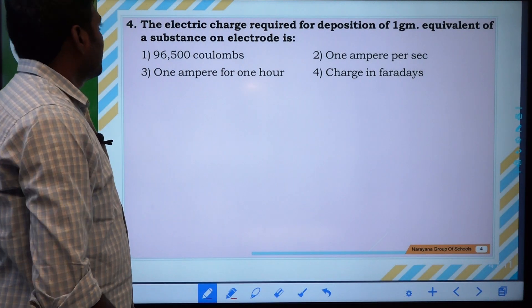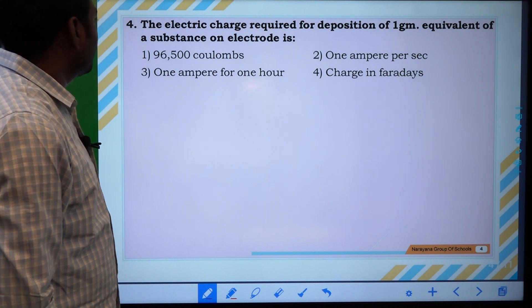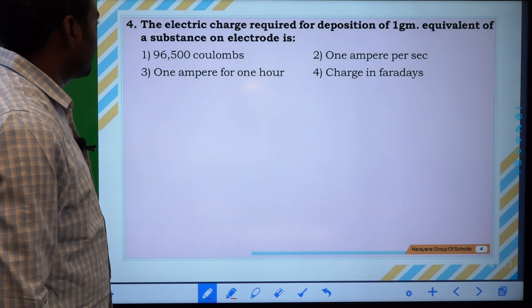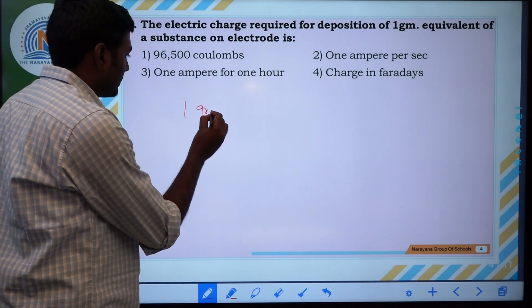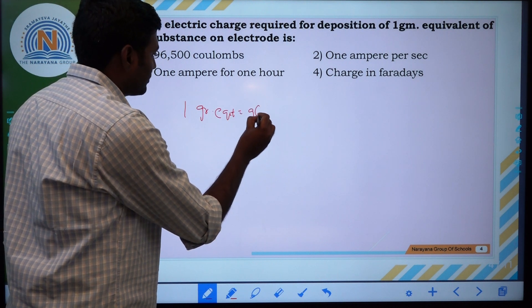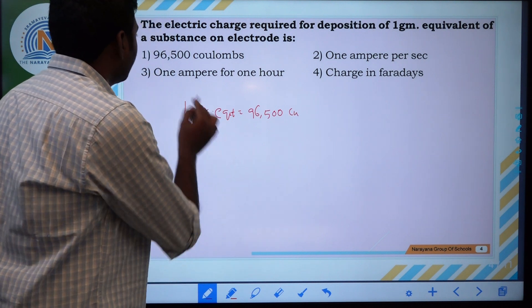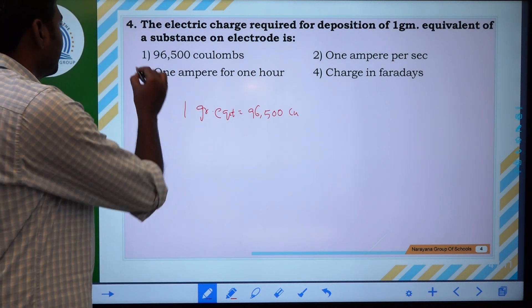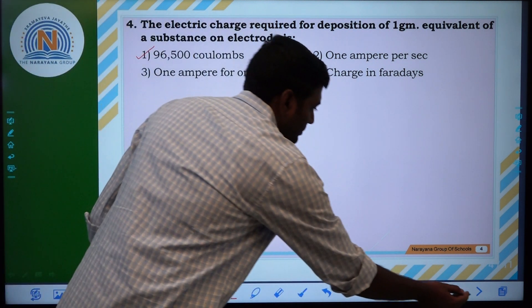We will go for the next question. The electric charge required for deposition of one gram equivalent of a substance on electrode is... One gram equivalent is equal to 96,500 coulombs. For this answer is first one. Now we will go for the next question.